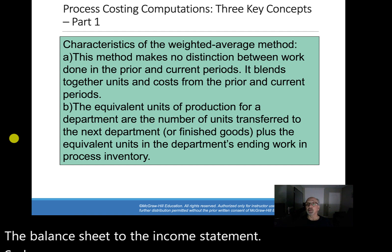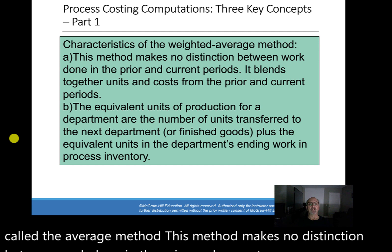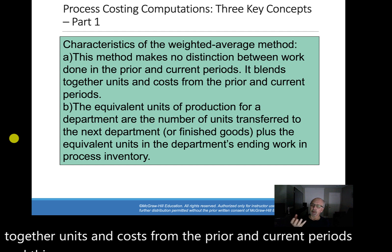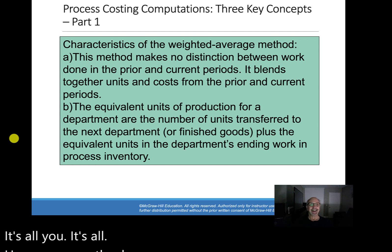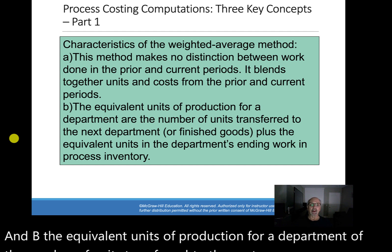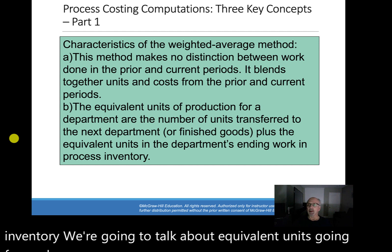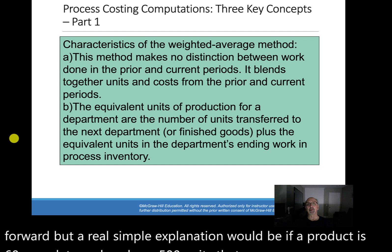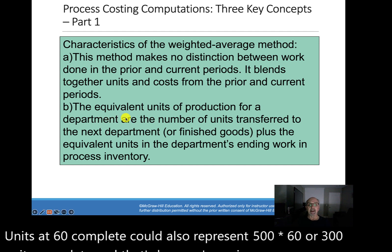Here are some characteristics of the weighted average method. This method makes no distinction between work done in the prior and current periods — it blends together units and costs from both. This makes sense because we're talking about one homogenous product. The equivalent units of production for a department are the number of units transferred to the next department plus equivalent units in the department's ending work in process inventory. For example, if we have 500 units that are 60% complete, those represent 500 times 60% — or 300 complete equivalent units.